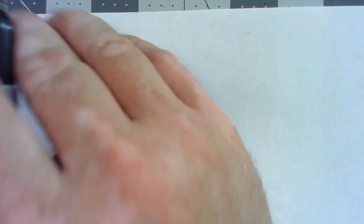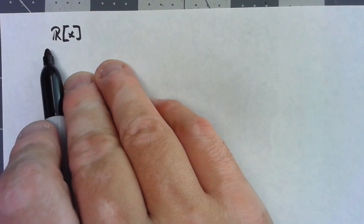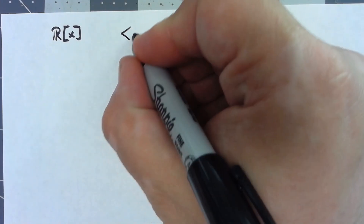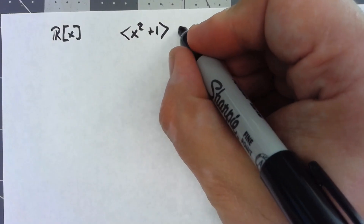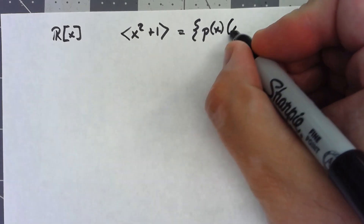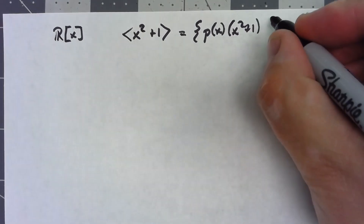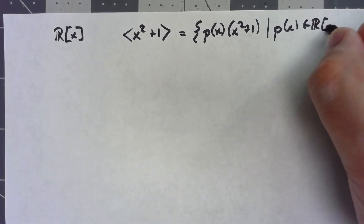Let's take a look at another factor ring. Just like we did before, let's say R[x] is the set of polynomials with real-valued coefficients, and I want to create the ideal generated by x squared plus 1. That is the set of all polynomials times x squared plus 1, where the polynomial comes from the real-valued polynomials.